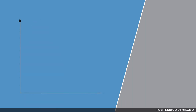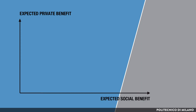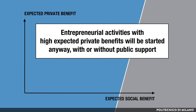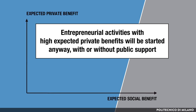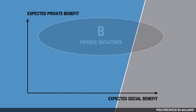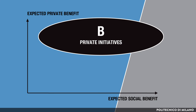Let's use a simple diagram to illustrate the point. In this diagram, the Y-axis represents the expected private benefit, and the X-axis is the expected social benefit. Other market imperfections absent, if we look at the diagram, one could argue that entrepreneurial activities with high expected private benefit will be started anyway, with or without public support. These activities are those identified by the area B.